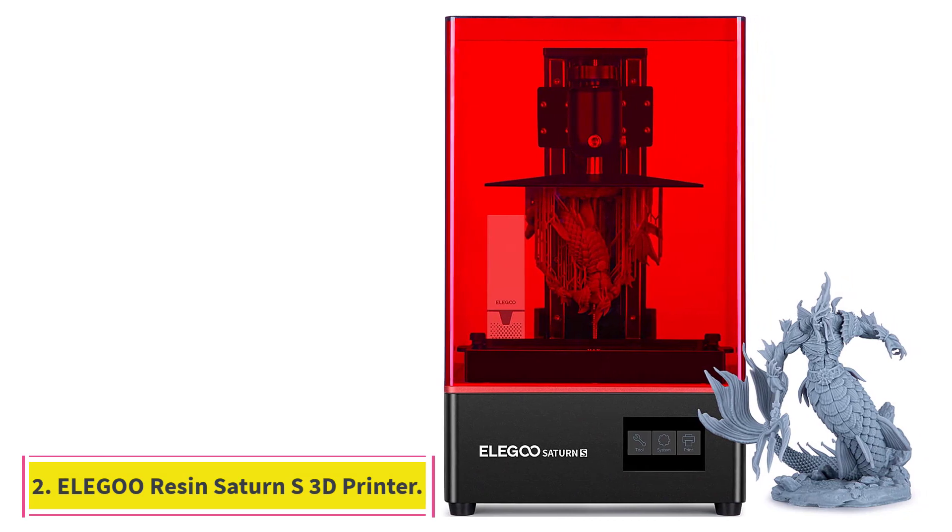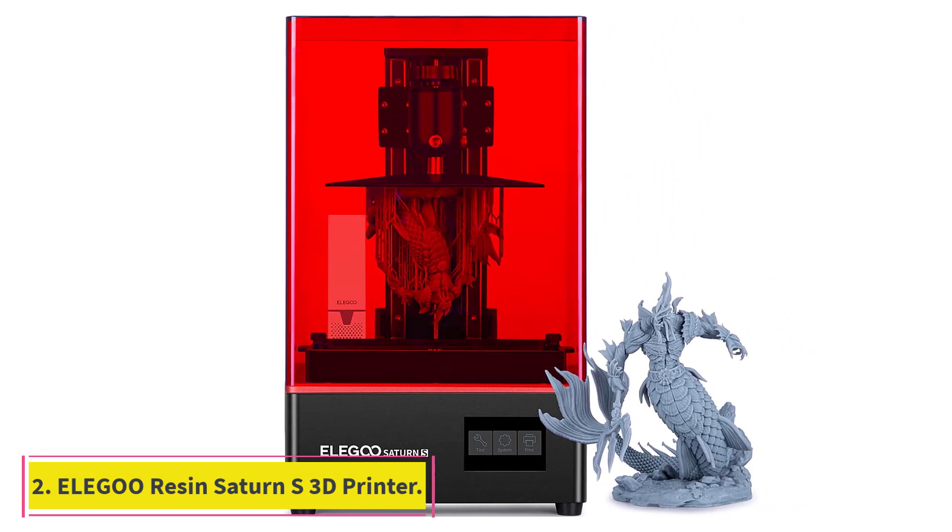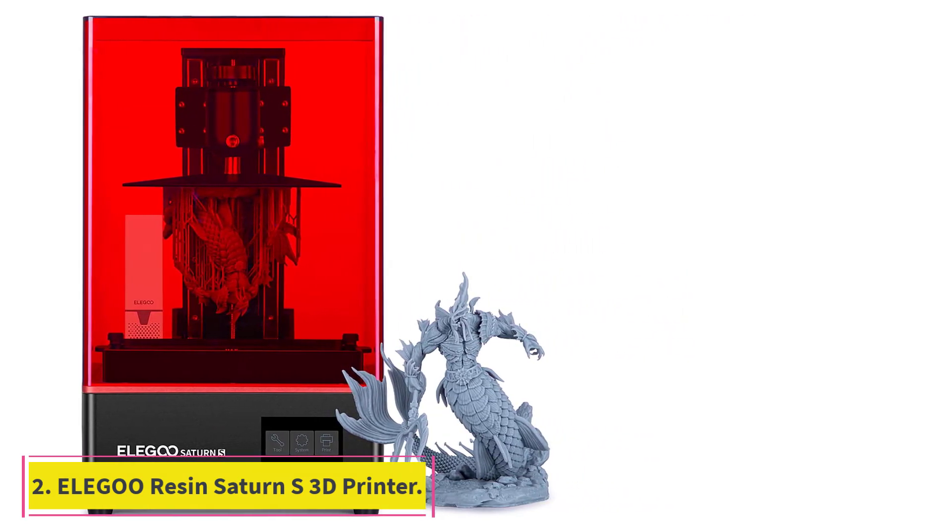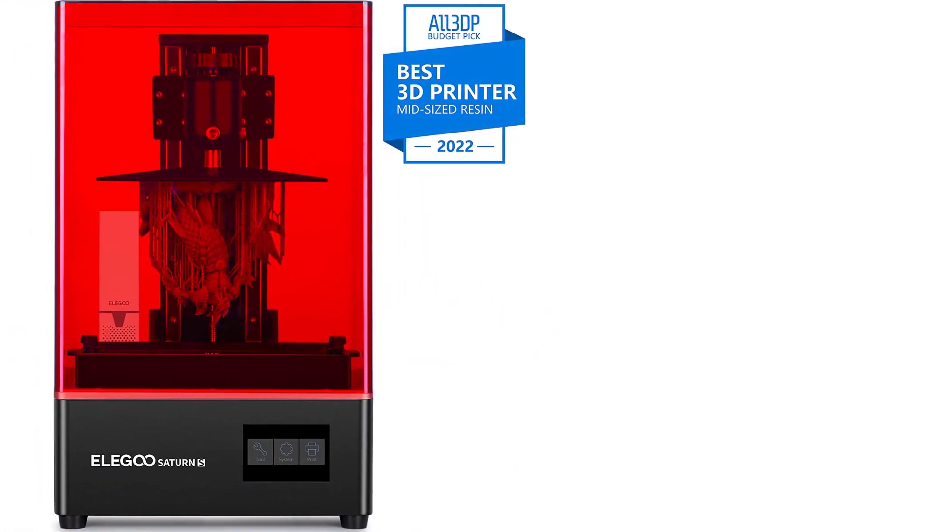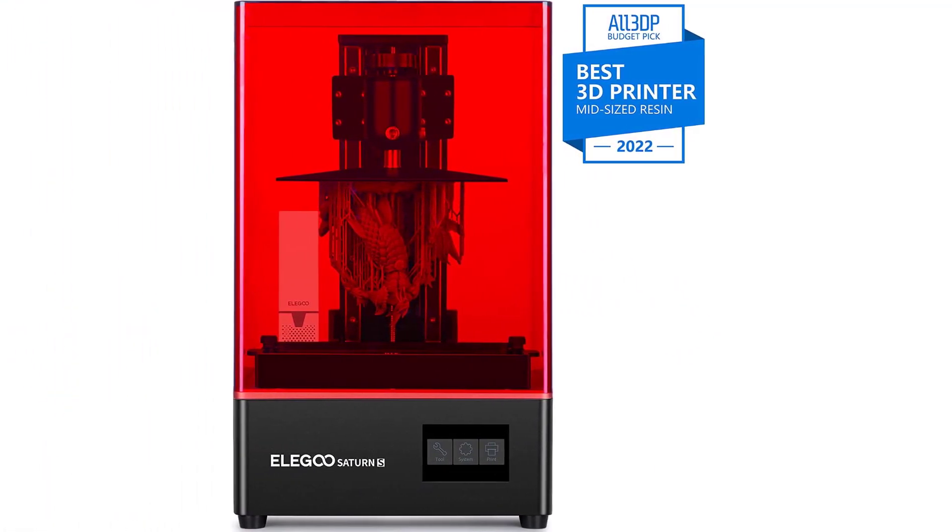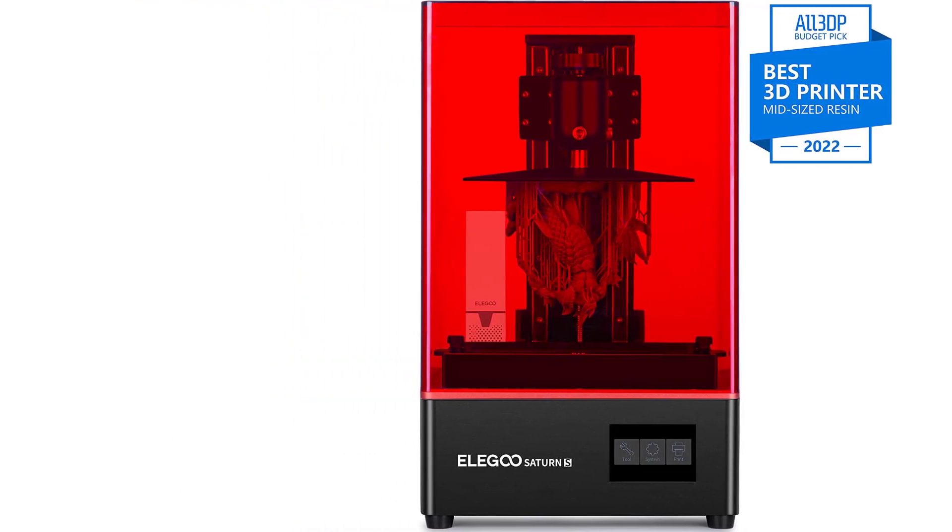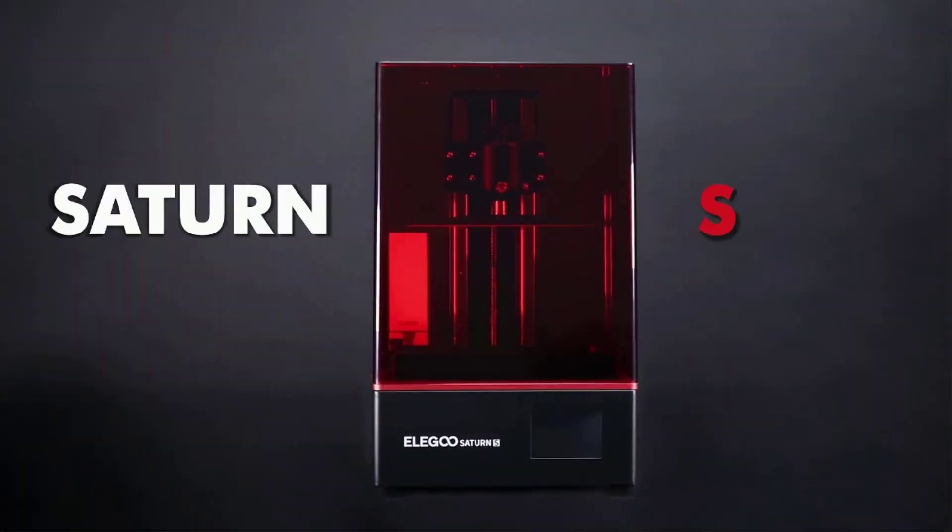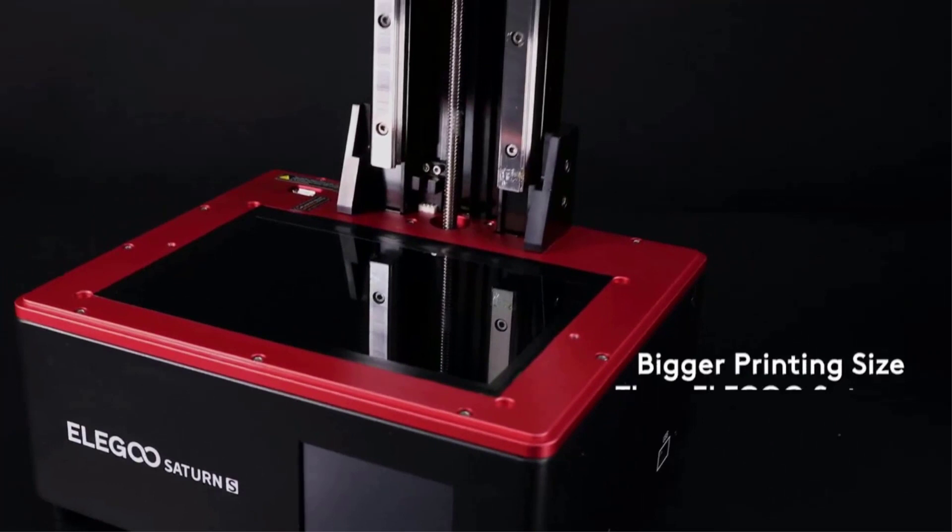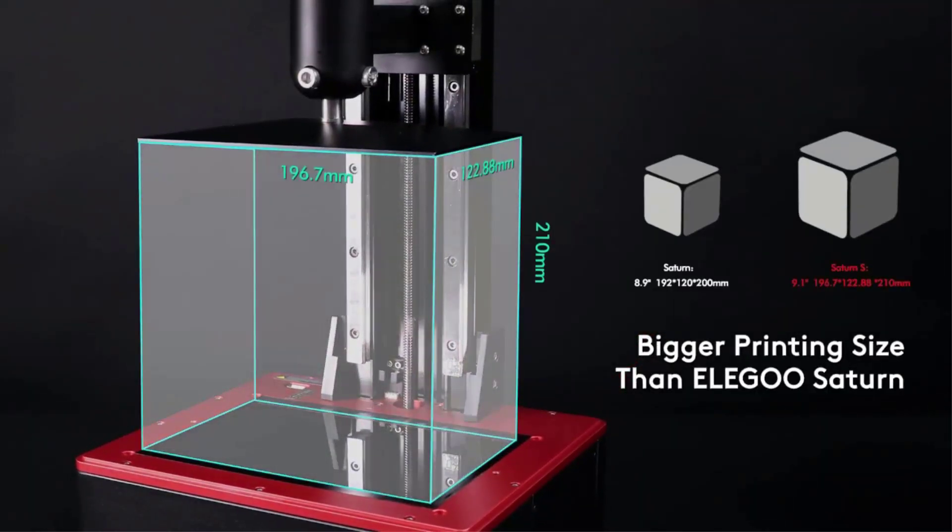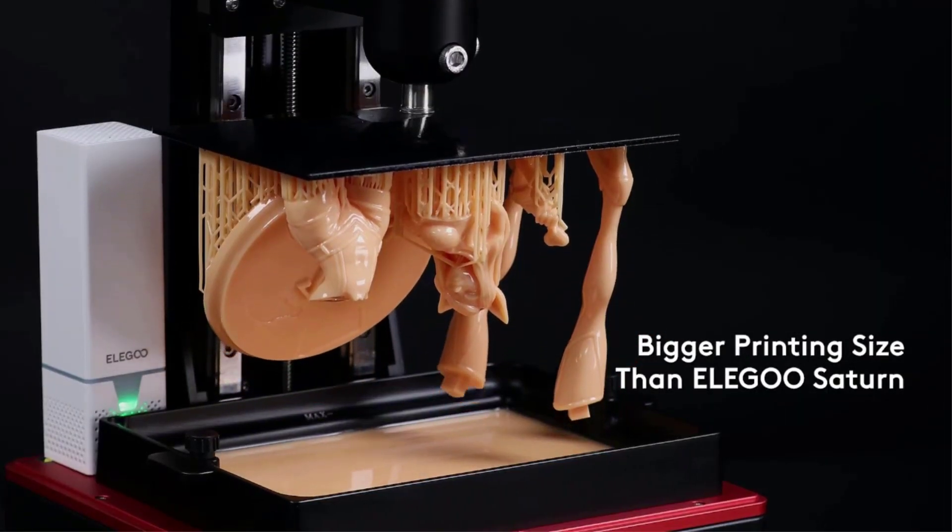At Number 2, Elegoo Saturn S 3D Printer. Improving upon the original Saturn, the Elegoo Saturn S is upgraded with better features to comply with 2023 resin 3D printer standards. It comes with a 9.1 inch 4K LCD screen with more pixels, 4098 x 2560, to match the increase in the build volume while still delivering high-resolution resin prints.